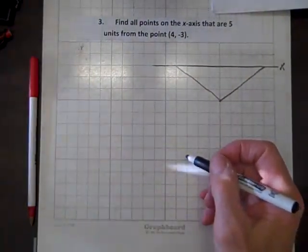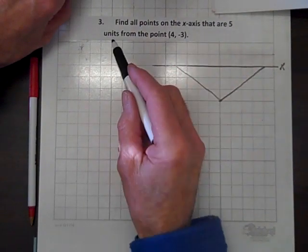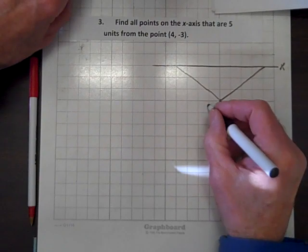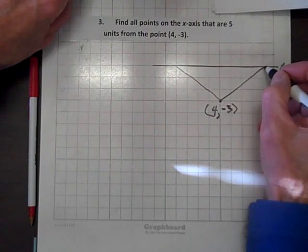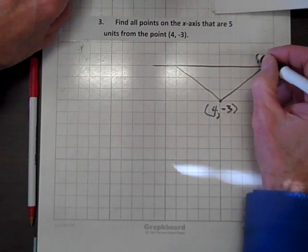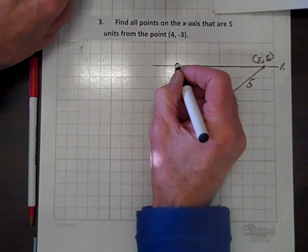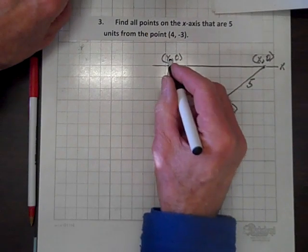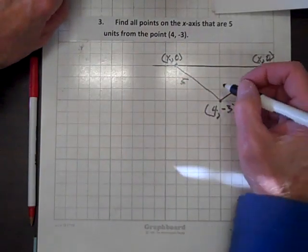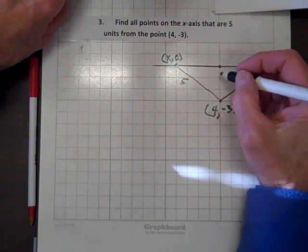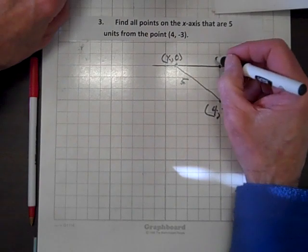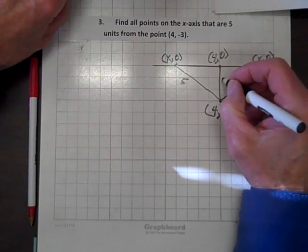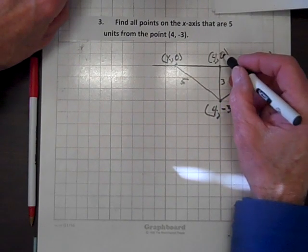For our final problem, we will find all the points on the x-axis that are 5 units from the point 4, negative 3. Here is the point 4, negative 3. The distance from this point to a point x, 0 on the x-axis is 5. The point on the x-axis immediately above 4, negative 3 is 4, 0, and the distance between these two points is 3.